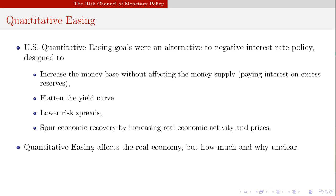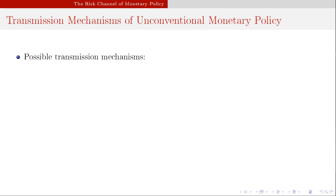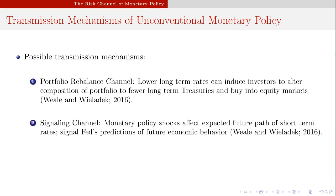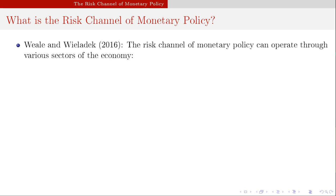Findings suggest banks take way less risk in the post-financial crisis period relative to the pre-financial crisis period. However, they experience a larger compression in their lending margins — the difference between the interest rate earned on new loans and the rate paid out on new deposits, essentially a profit margin. The risk channel played a larger role in unconventional monetary policy regimes compared to the conventional regime. QE increased the money base, flattened the yield curve, and lowered risk spreads to spur economic recovery by increasing real economic activity and prices.